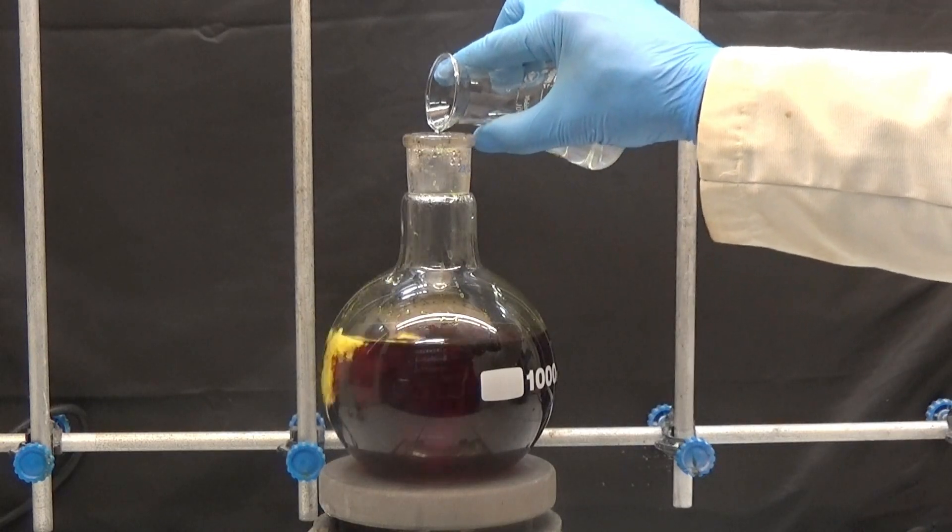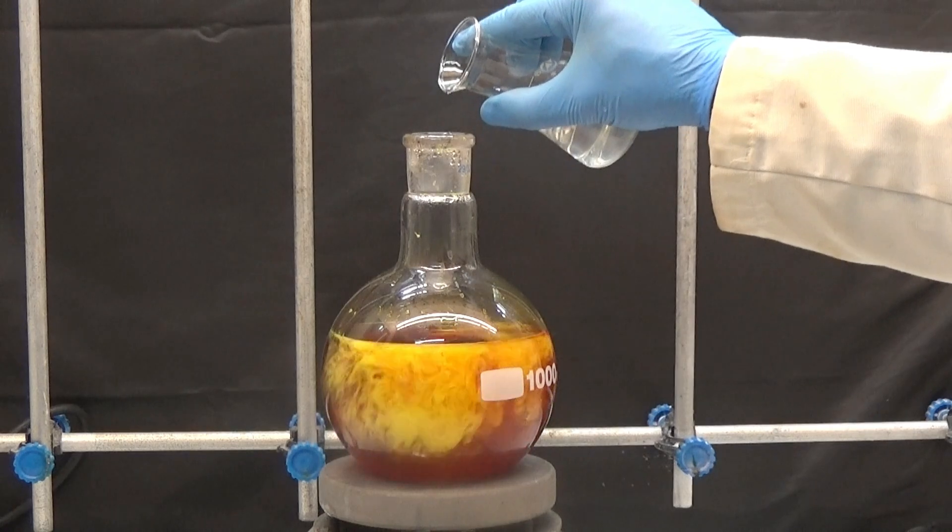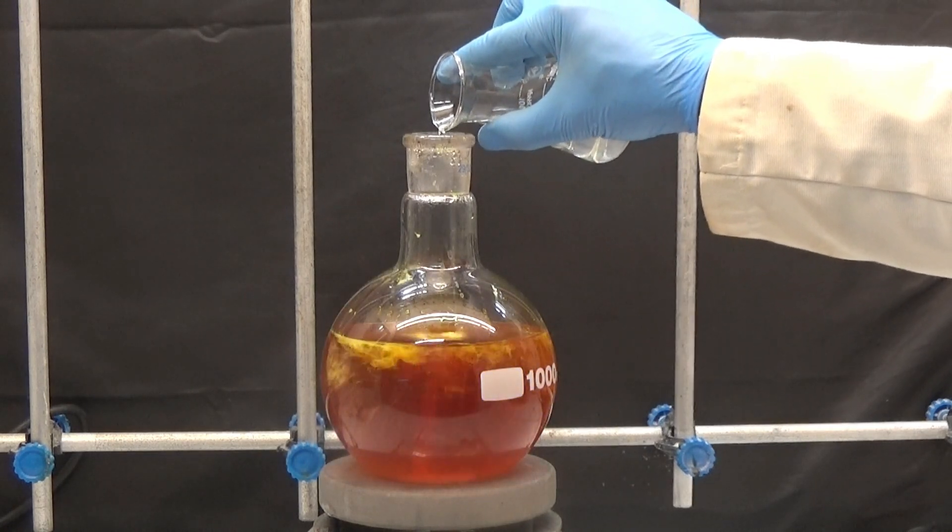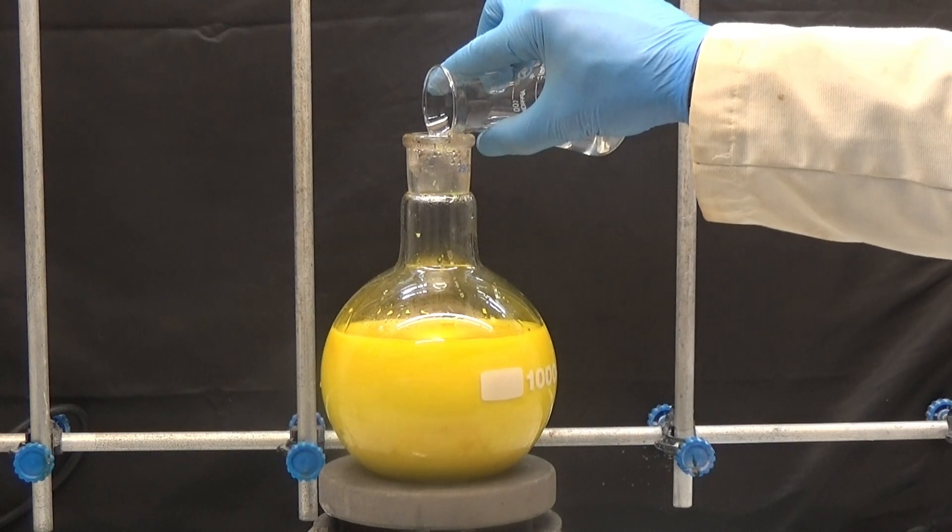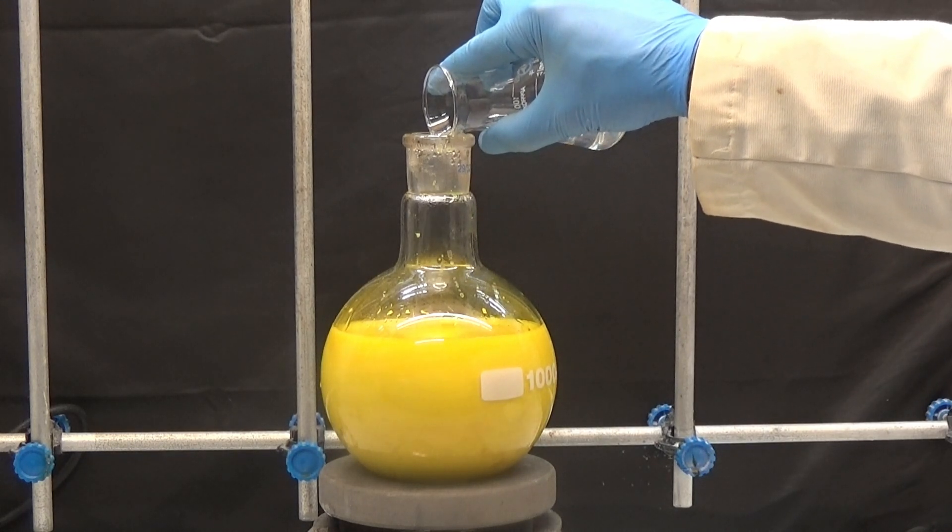After cooling the yellow solution to 15 degrees, slowly add the diluted sulfuric acid we prepared before. A yellow solid precipitates when the acid is added. Let it cool in the refrigerator after adding all the acid.